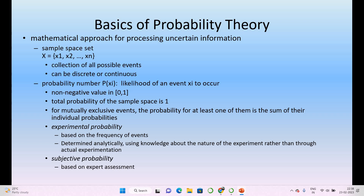Normally there are two different kinds of probability theory: experimental probability and subjective probability. Experimental probability is based on the frequency of events — how frequently events are occurring — and it is determined analytically using knowledge about the nature of the experiment rather than through actual experimentation. Subjective probability is based on expert assessment. Based on the frequency of events about the nature of the experiment, we can estimate experimental probability, and subjective probability is calculated by an expert.